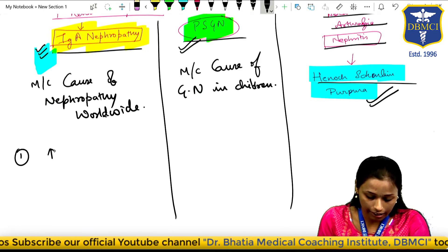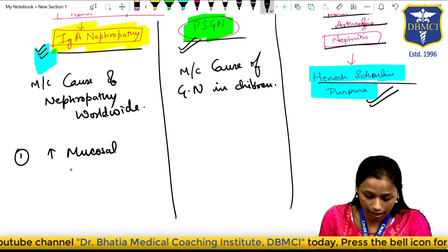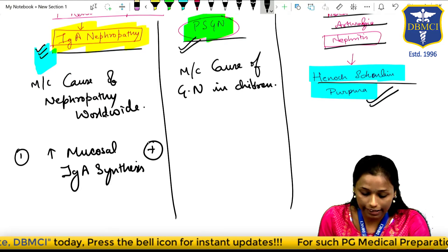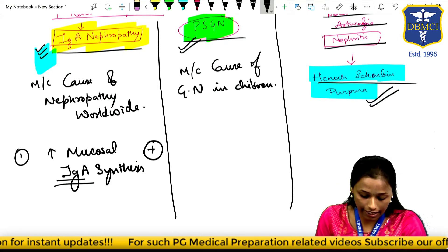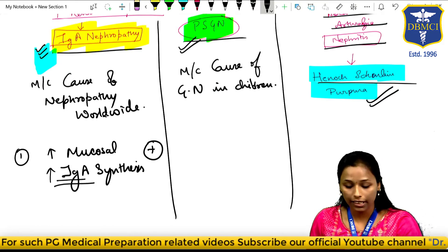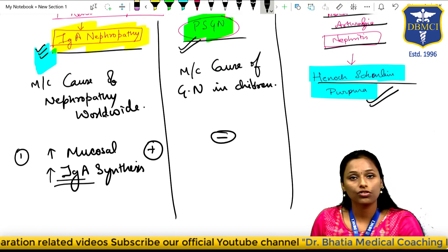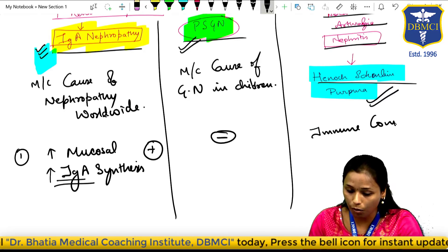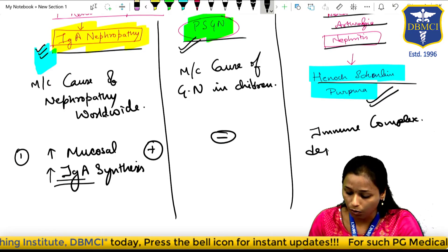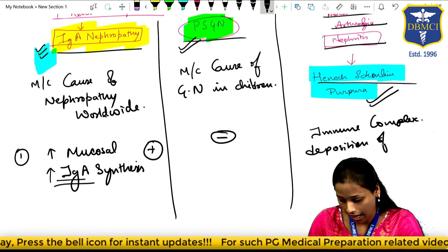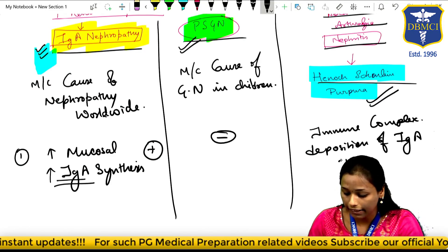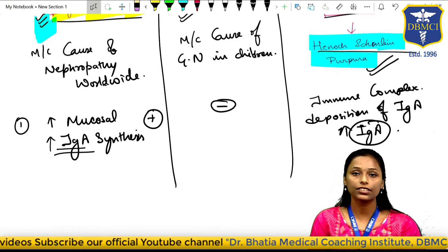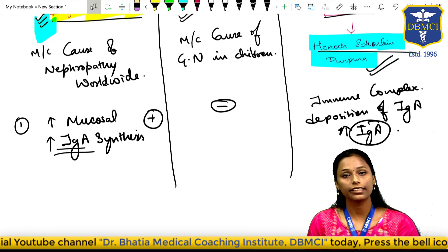The first differentiating feature is increased mucosal IgA synthesis. IgA is increased in IgA nephropathy. It is not seen in post-streptococcal glomerulonephritis. However, in Henoch-Schönlein purpura, since it involves immune complex deposition of IgA, IgA levels are elevated. So both IgA nephropathy and Henoch-Schönlein purpura have increased levels of IgA.